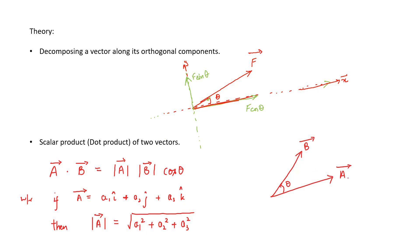We also need to know the dot product of two vectors. For vectors a and b with angle θ between them, the dot product a·b equals the magnitude of a times the magnitude of b times cosine of θ. The magnitude of a vector with components a1, a2, a3 is the square root of a1² + a2² + a3², which is simply the length of the vector.